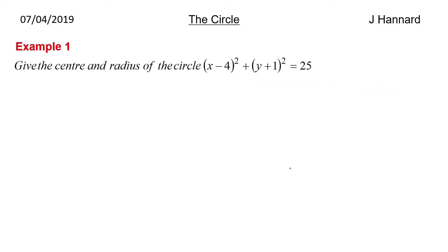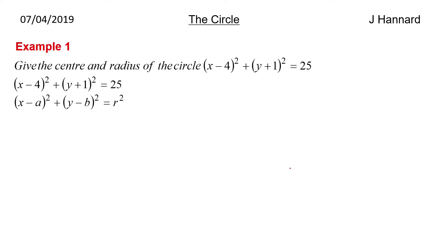Example 1: give the centre and radius of the circle (X minus 4) squared plus (Y plus 1) squared equals 25. Straight away we can write it like that. We know that the centre is A, B and remember our form was (X minus A) squared plus (Y minus B) squared equals R squared. We compare coefficients and say our A must be 4.